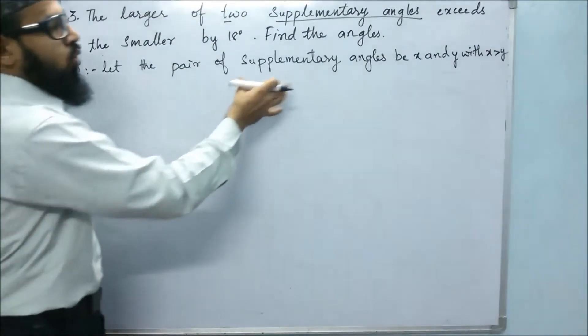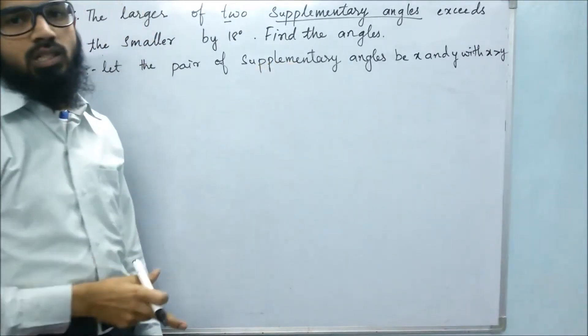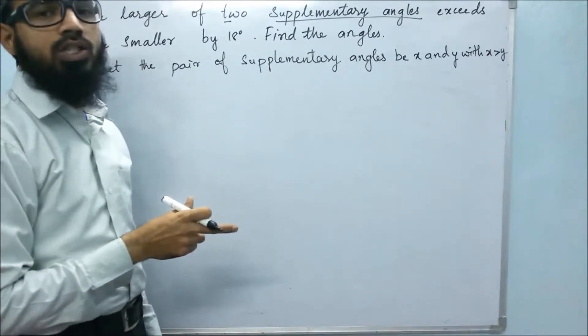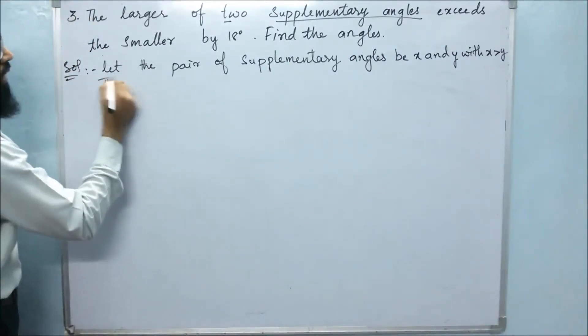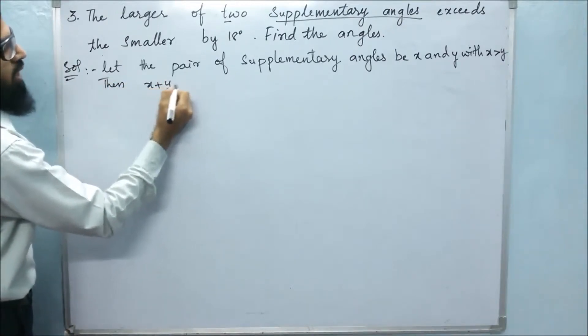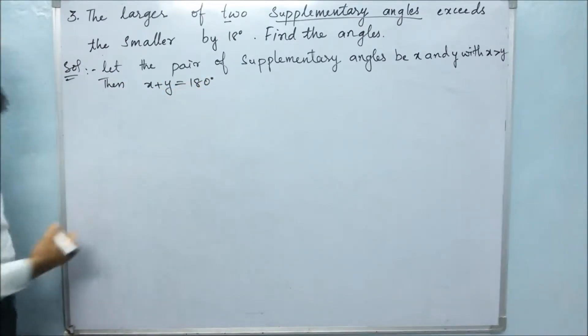As we know, supplementary angles means their sum will equal 180 degrees. So here, we will get x plus y equals 180 degrees.